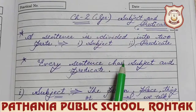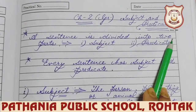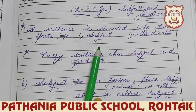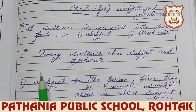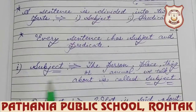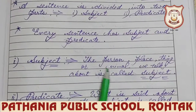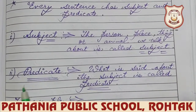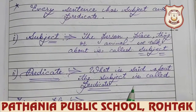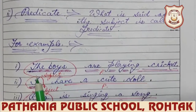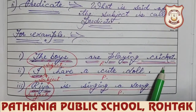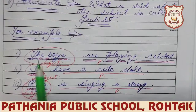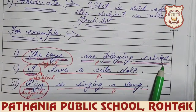Your chapter number 2 in grammar is Subject and Predicate. A sentence is divided into two parts — subject and predicate. Every sentence has a subject and predicate. What do you mean by subject? The person, place, thing, or animal we talk about is called the subject. And predicate — what is said about the subject is called the predicate. For example, 'The boys are playing cricket.' We are talking about the boys, so 'the boys' is the subject, and 'are playing cricket' is the predicate part.